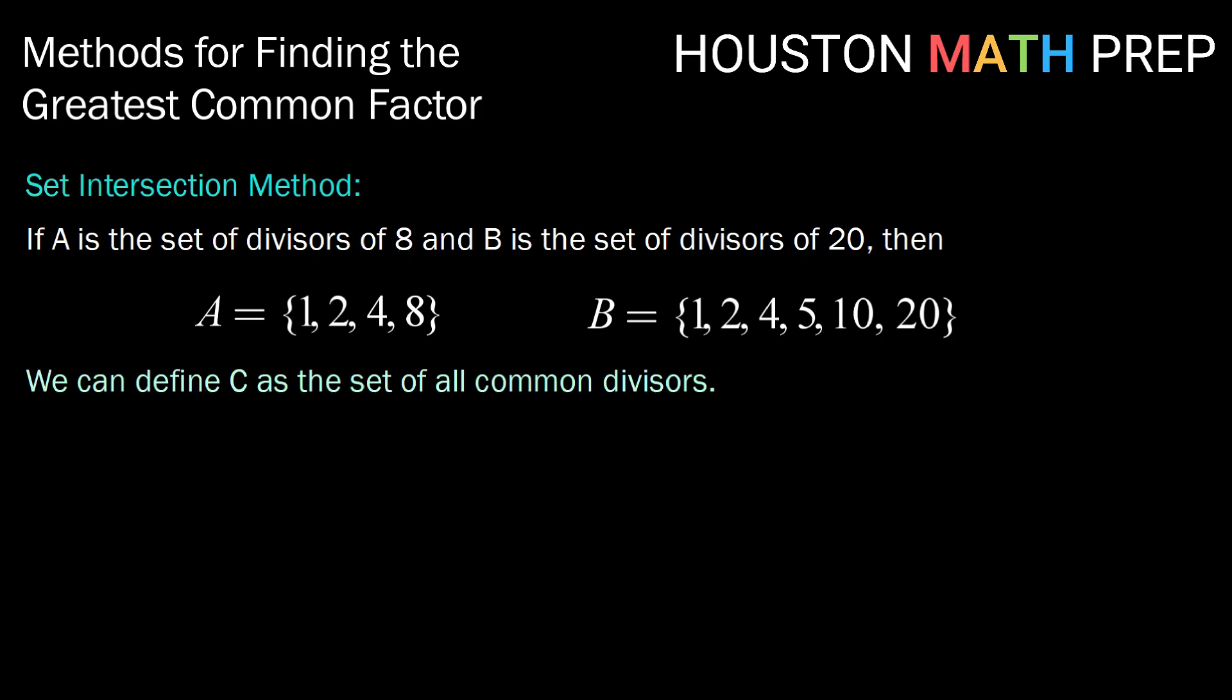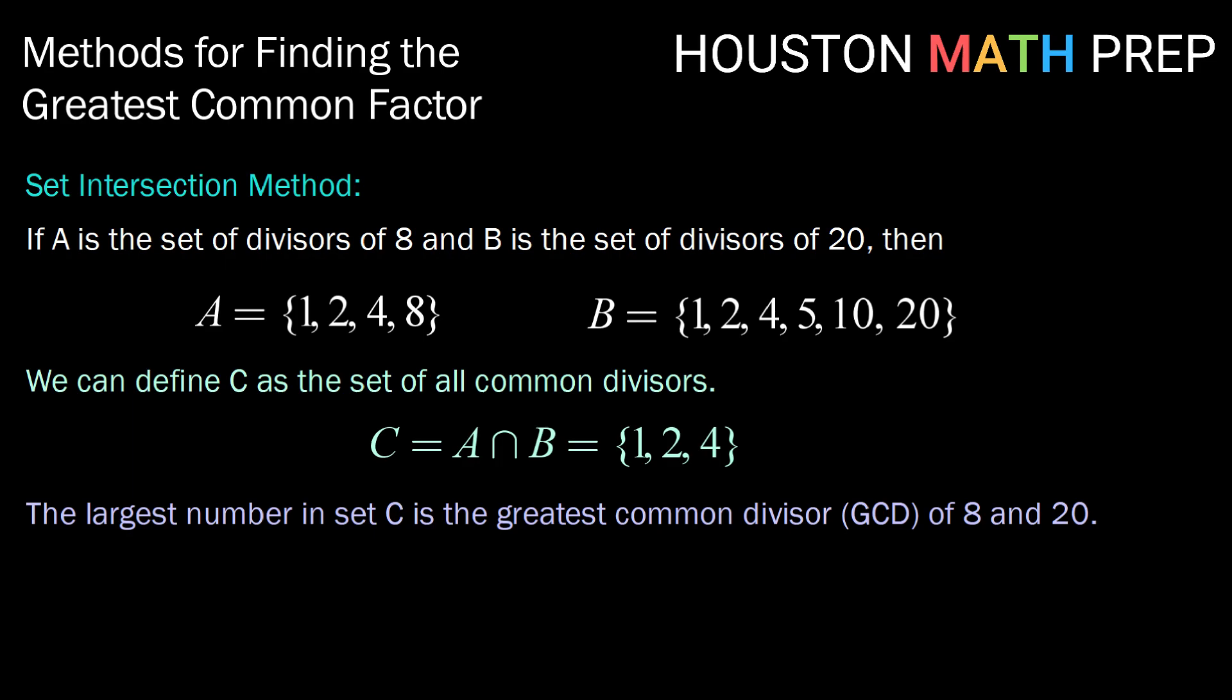Then we define a new set C as the set of all the divisors that are common to both 8 and 20. So C would be the intersection of A and B, and that would be all numbers that are in common, which would be 1, 2, and 4. The largest number in that set is our greatest common divisor, or GCD of 8 and 20. In this case, 4.